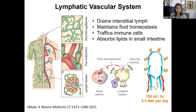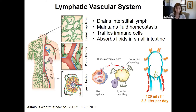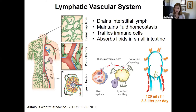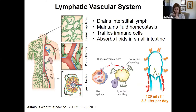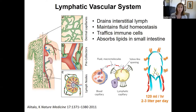Lymphatic vessels accomplish these diverse roles by having highly specialized and permeable barriers compared to blood endothelial cells. These oak-leaf overlapping junctions permit large molecules and cells to enter the dermal capillaries. Through peristaltic contraction of larger collecting vessels, they pull and drain fluid from the periphery back into the central blood circulation through the thoracic duct.